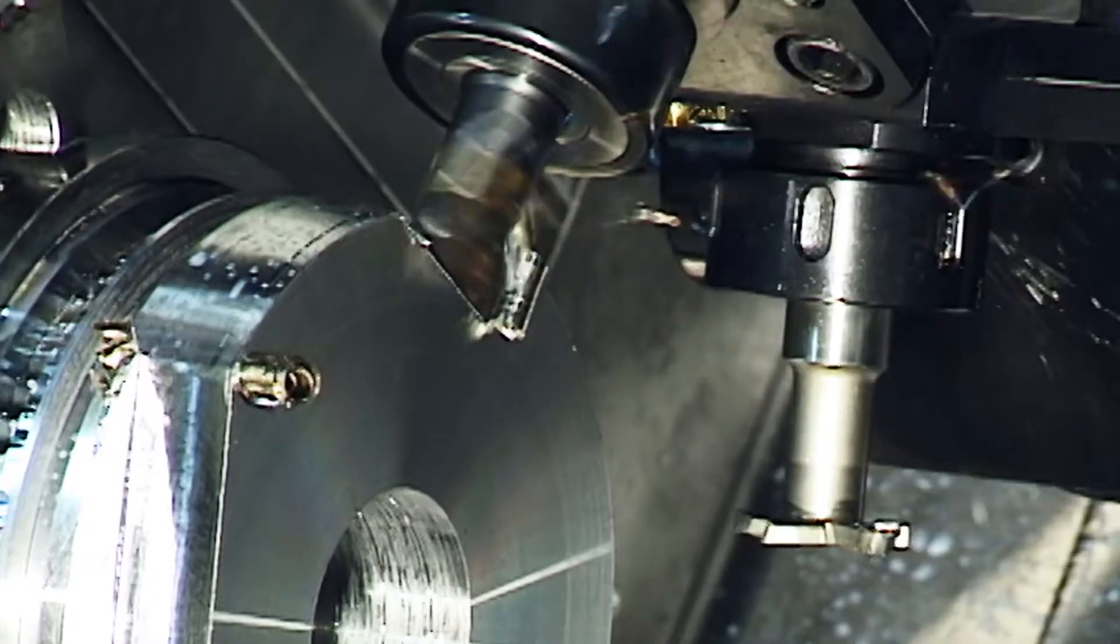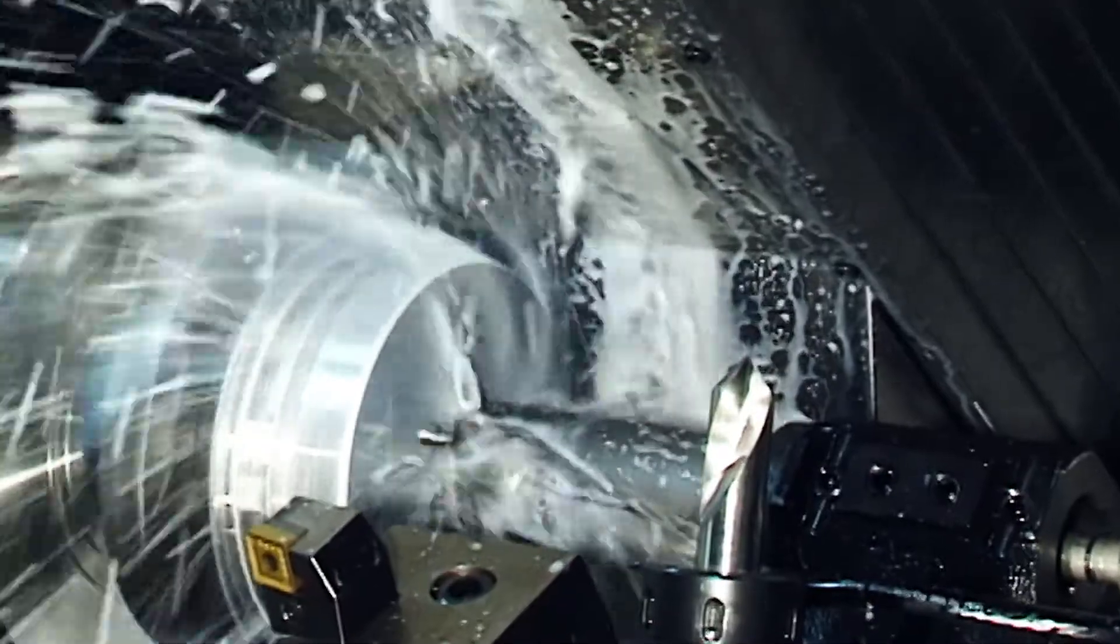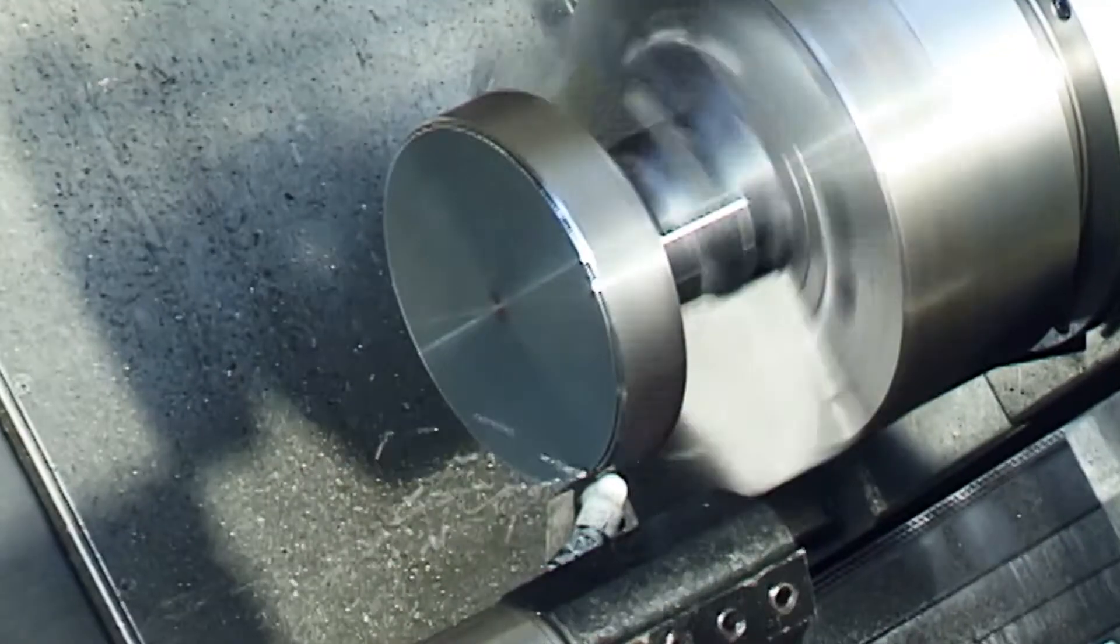It's available with a 10 or 12 inch chuck capability on the left side and on the right side. Both spindles are completely balanced, so you have the same cutting capability on both sides.